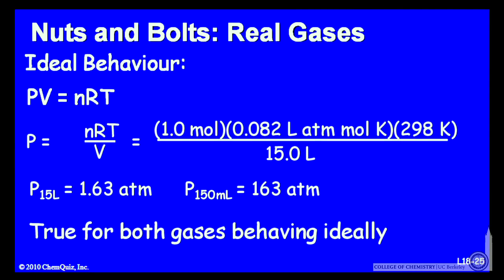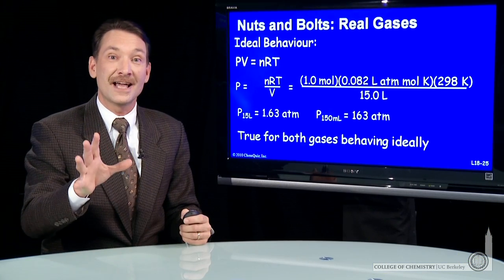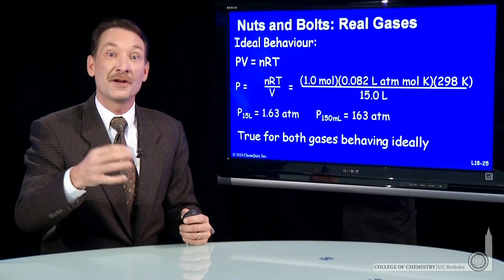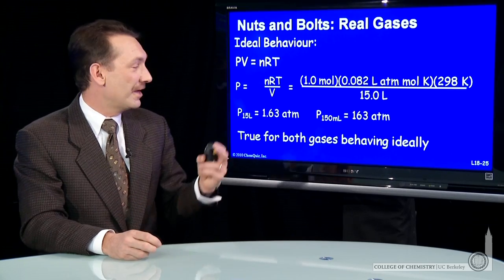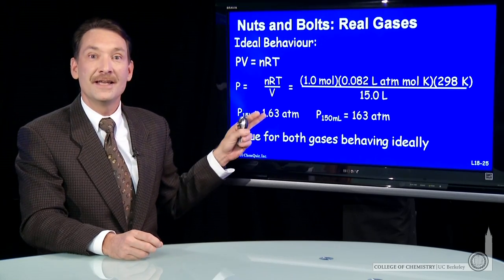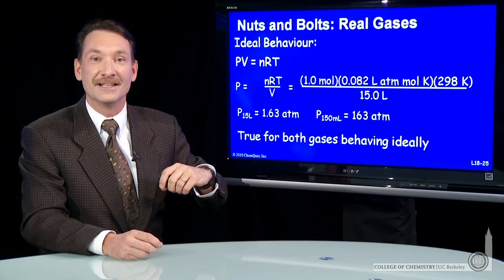Both gases would have a pressure of 1.63 atmospheres at 15 liters. If you reduce that volume down to 150 milliliters — a reduction by a factor of 100 — the pressure goes up by a factor of 100 to 163 atmospheres. The ideal gas calculation is easy because we don't have to specify which gas; they're both predicted to have the same pressures if behaving ideally.